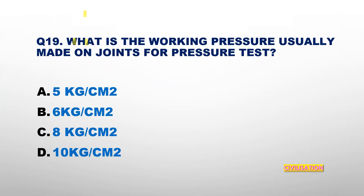Question number 19: What is the working pressure usually applied on joints for a pressure test? Options: 5 kg/cm², 6 kg/cm², 8 kg/cm², or 10 kg/cm²? The answer is 10 kilogram per centimeter square.